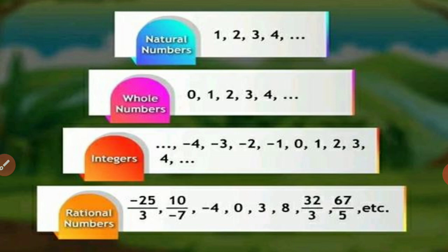Examples of rational numbers: minus 25 upon 3, 10 upon minus 7, minus 4, 0, 3, 8, 32 upon 3, 67 upon 5, etc. These are the rational numbers.